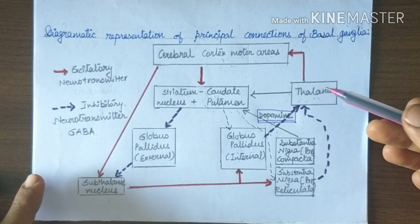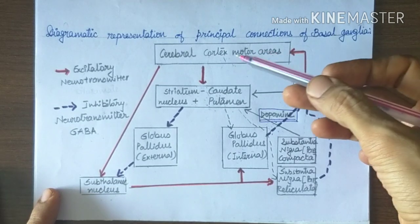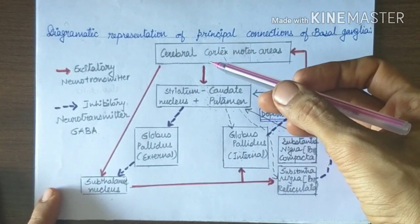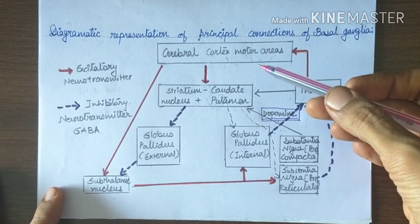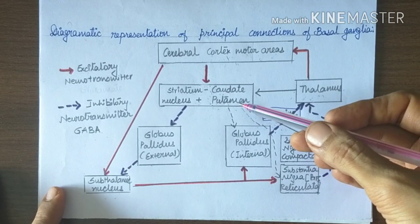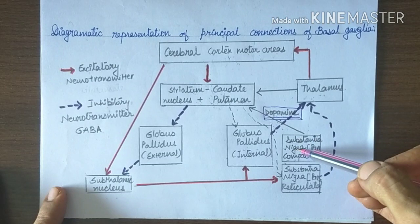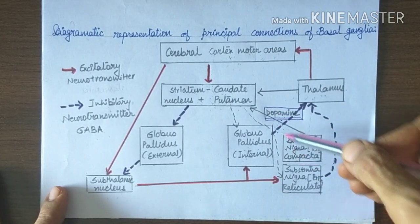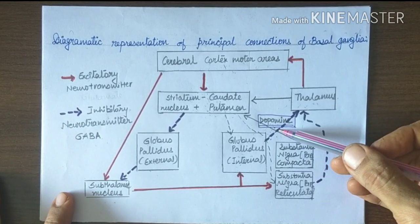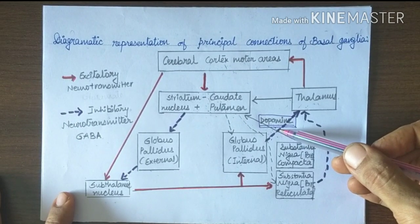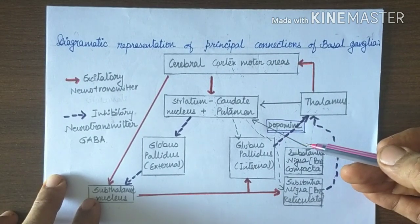Parkinson's disease is a neurodegenerative disease. This is what we have already discussed: diagrammatic representation of connections of basal ganglia. What is the cause of Parkinson's disease? It is due to loss of dopaminergic fibers in the nigrostriatal pathway, substantia nigra to corpus striatum. Either there is loss of dopaminergic fibers or loss of dopamine receptors in the basal ganglia.